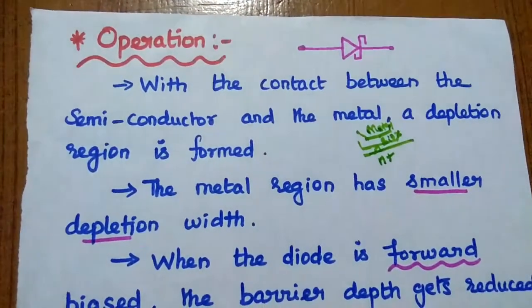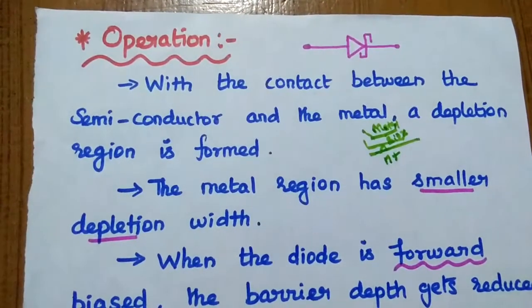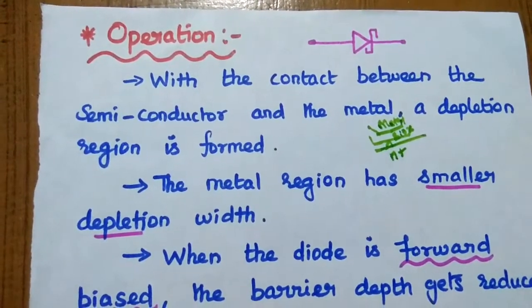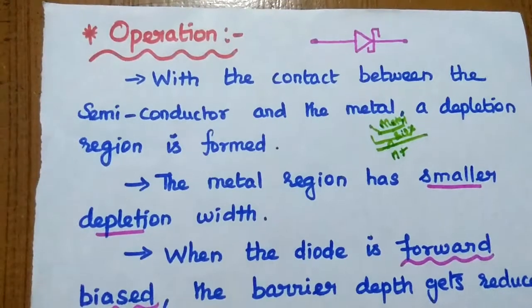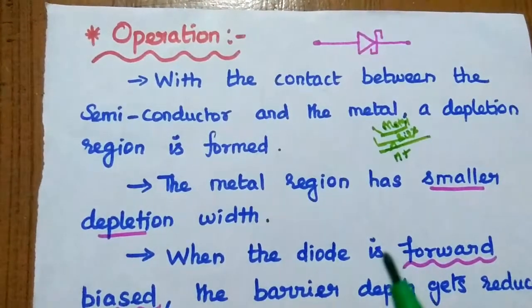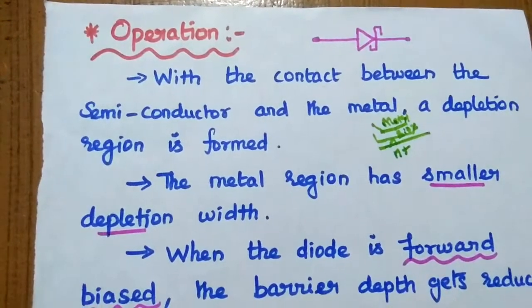Operation of Schottky barrier diode. With the contact between the semiconductor and the metal, the depletion region is formed. A metal has a smaller depletion with N-type material.